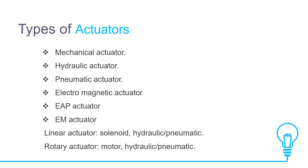What are the types of actuators? Actuator types vary depending on motions, power configurations, styles and sizes depending on the application. Types include: mechanical actuator, hydraulic actuator, pneumatic actuator, electromagnetic actuator, EAP actuator, EM actuator, linear actuator (solenoid, hydraulic or pneumatic), rotary actuator (motor, hydraulic or pneumatic).